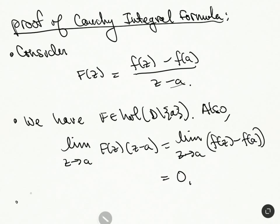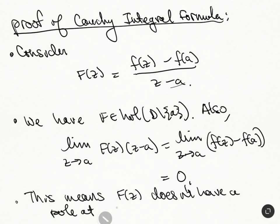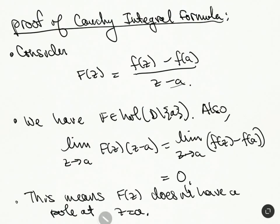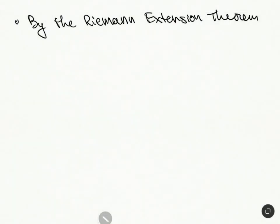So this means F of Z doesn't have a pole at Z is equal to A. So by the Riemann extension theorem, so we can extend this thing continuously to the point A. We know that F is actually a holomorphic function on all of D.